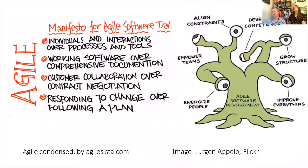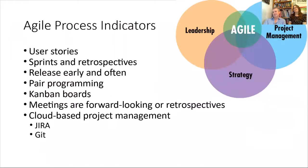The Agile Manifesto for software development emphasizes individuals and interactions, working software over comprehensive documents, customer collaboration instead of just what's in the contract, and responding to change over following a plan. Agile process indicators include user stories, sprints and retrospectives, releasing early and often, pair programming, Kanban boards, forward-looking meetings and retrospectives, cloud-based project management, and tools like Jira and Git.